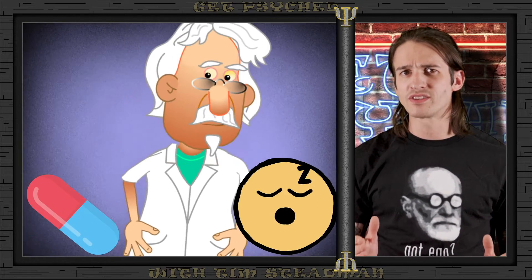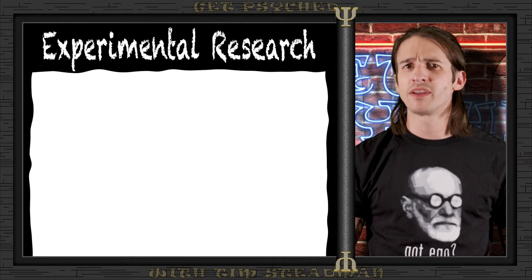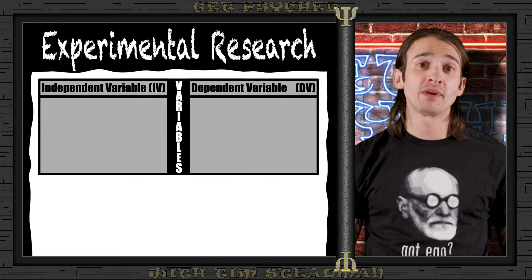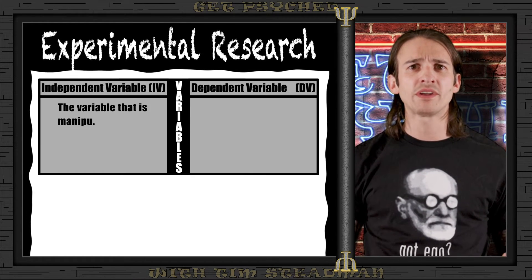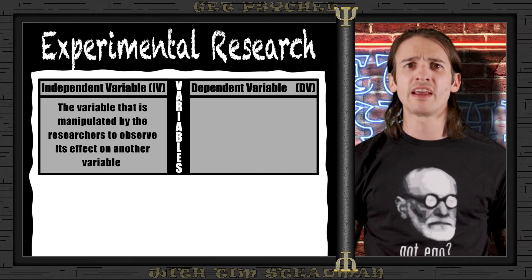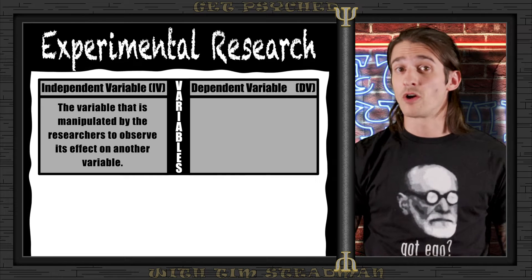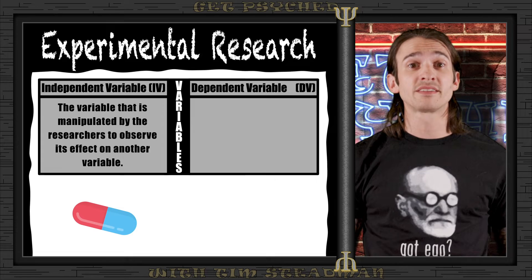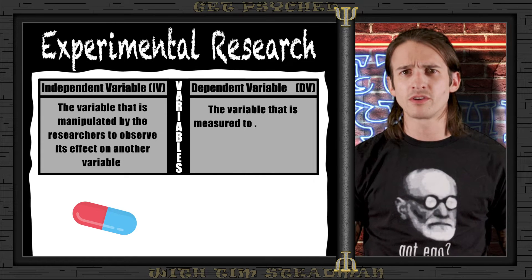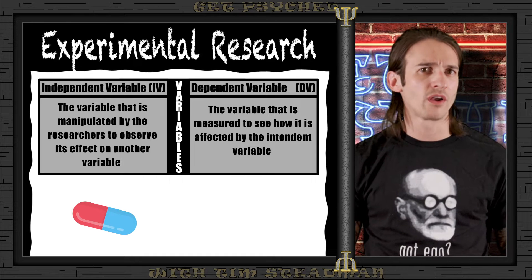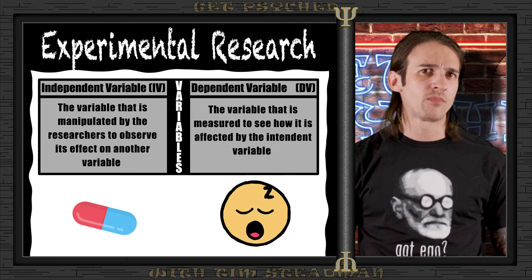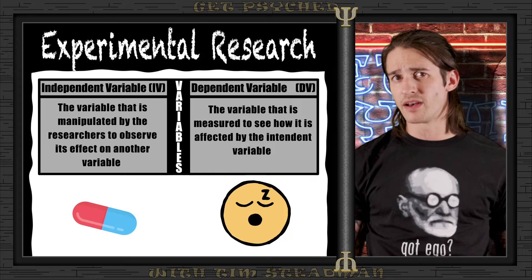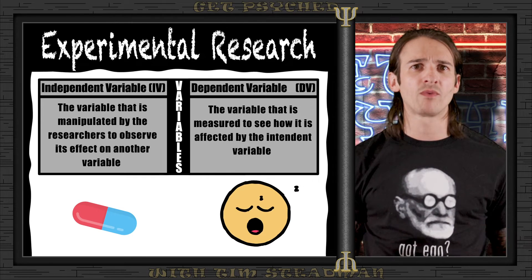In experimental research, it is very important to clearly define our independent and dependent variables. The independent variable (IV) is the variable that researchers manipulate to see if it causes any effect — think of it as the cause in a cause-and-effect relationship. In our example, the sleeping pill would be the independent variable. The dependent variable (DV) is the variable researchers hope to see a change in — the effect resulting from manipulating the IV. How well-rested participants report feeling would be the dependent variable. We are in control of which participants take the sleeping pill, and as a result we measure the change in how well-rested they are.